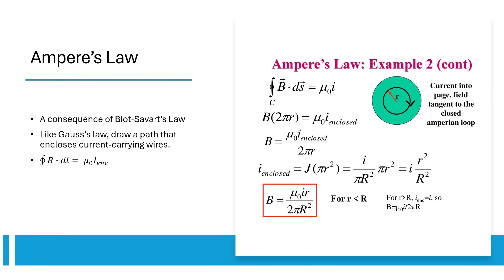You want to draw your path so that the B-field is the same everywhere on the loop. That way you can pull B out of the integral, as shown in the example derivation. Then you can use ratios to find the enclosed current. We see that B-field in a wire is proportional to radius.